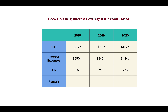Now let's analyze the Interest Coverage Ratio for Coca-Cola. In 2018, their EBIT was 9.2 billion dollars with an interest expense of 950 million dollars, giving an ICR of 9.68. In 2019, their EBIT was 11.7 billion dollars with interest expense of 946 million dollars — 12.37 times their interest payment, a very strong result. In 2020, their EBIT was 11.2 billion dollars and interest payments went up to 1.44 billion dollars, but they were still making 7.78 times their interest payment.